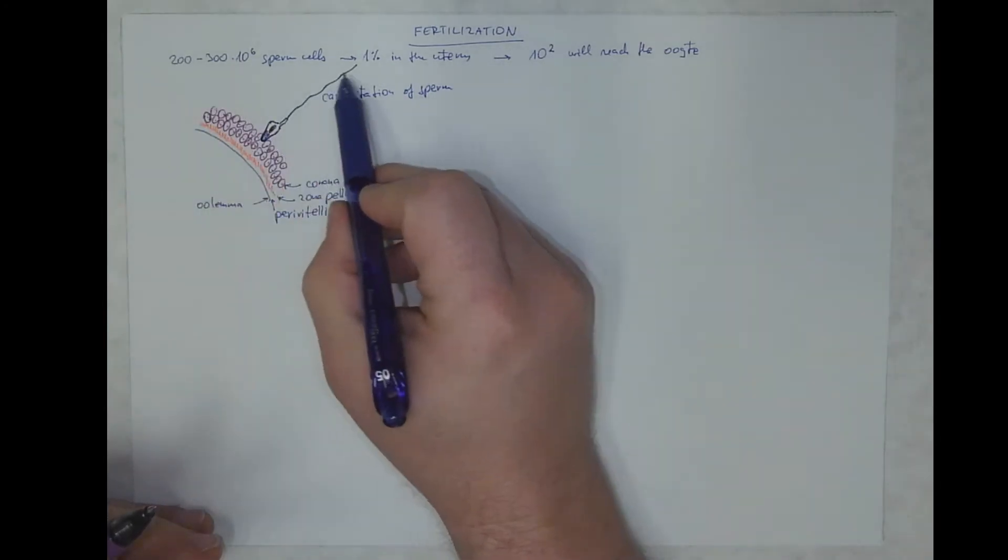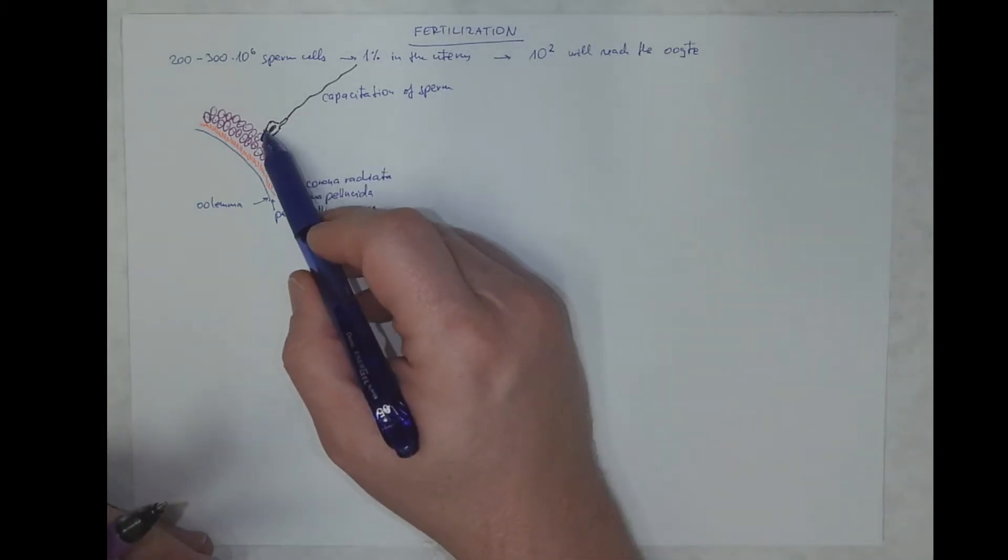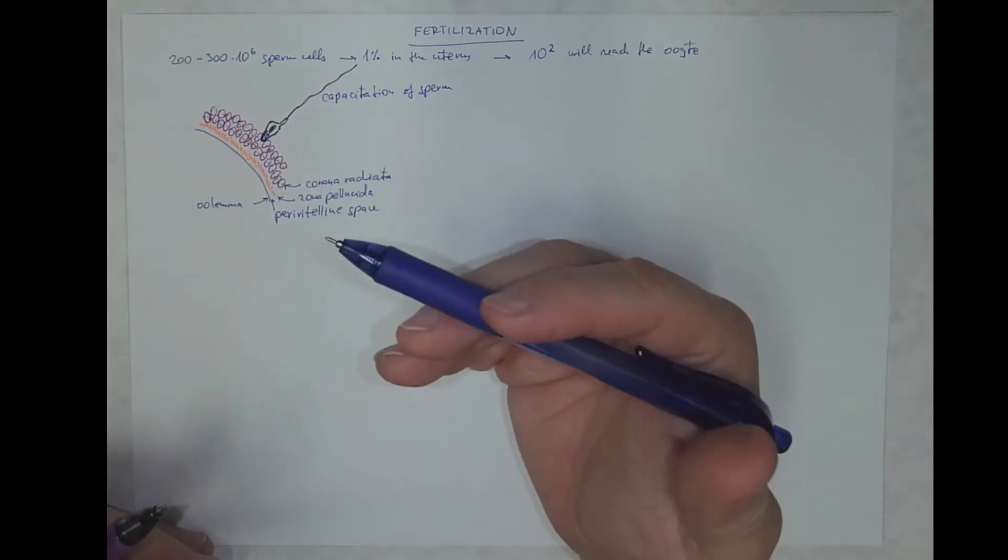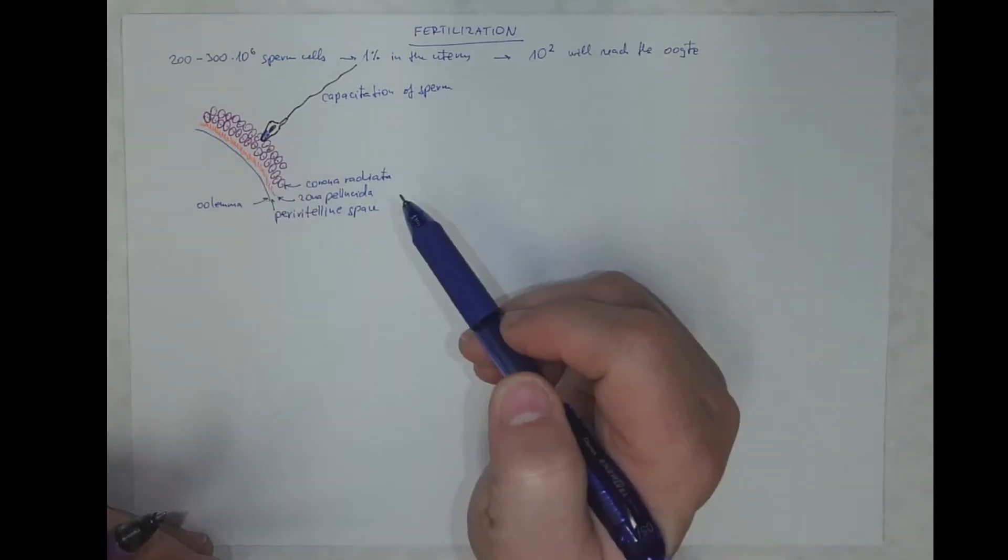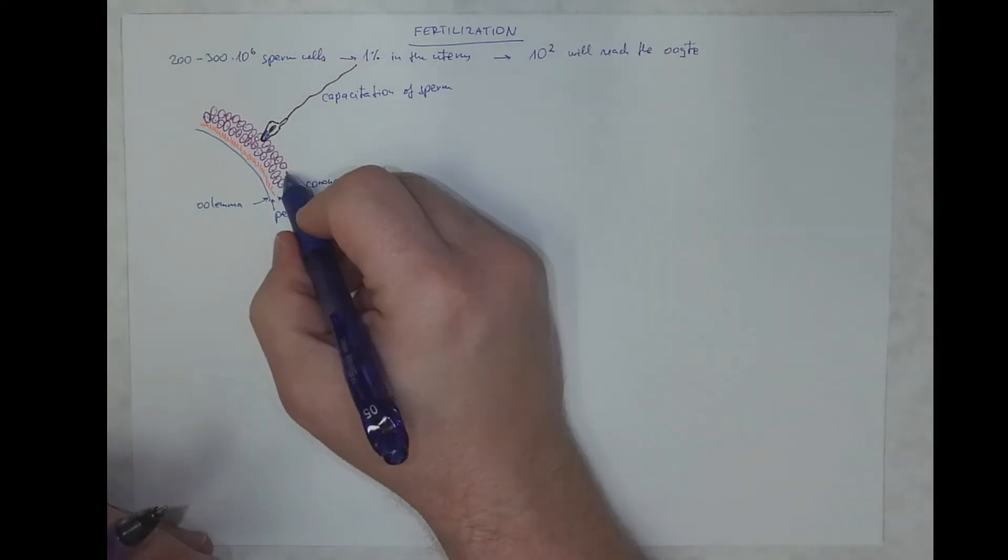It happens in the female genital system. And the outcome of this is that the sperm cell is prepared for the release of these enzymes, for adhesion and the release of the enzymes from the acrosome.